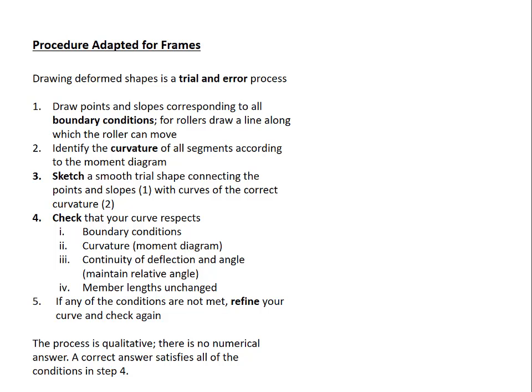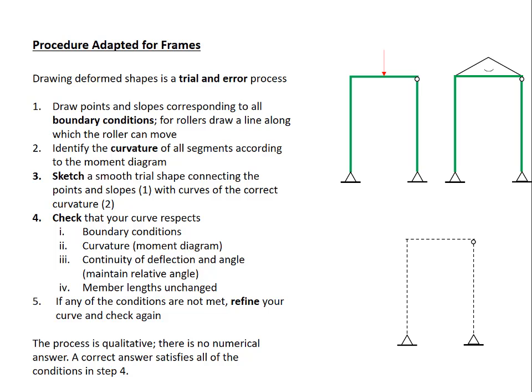Now let's look at an example to illustrate the process. We're showing a frame. It's a portal frame with a hinge at the top of one of the columns. There's a point load in the middle of the beam. The moment diagram that results is shown to the right. We start by sketching the undeformed shape in dashed lines, and that's a reference for what we're going to draw next. Here, the boundary conditions are both pins, and so we can draw points at each pin. Those points cannot move.